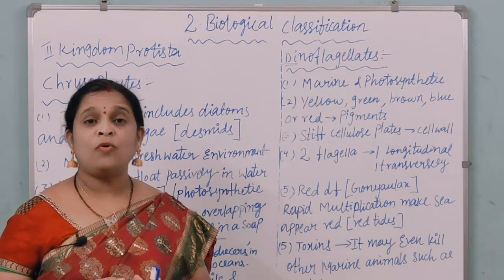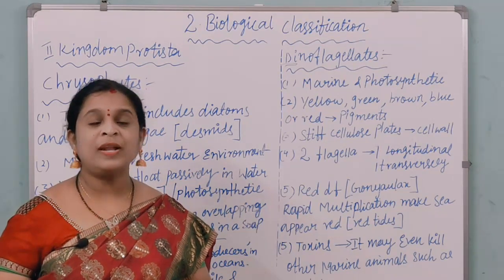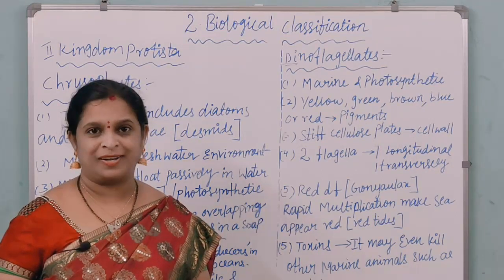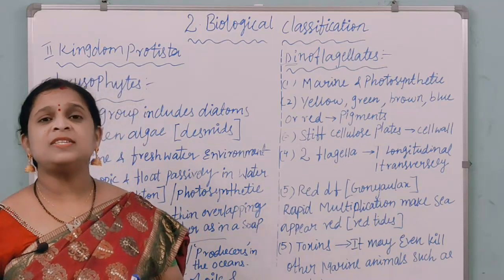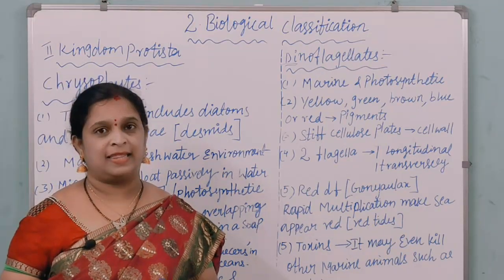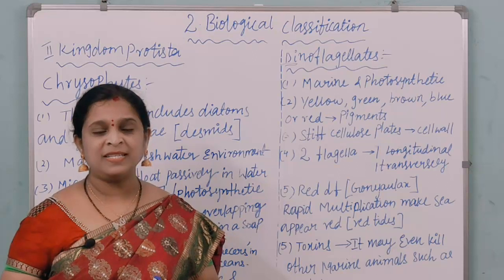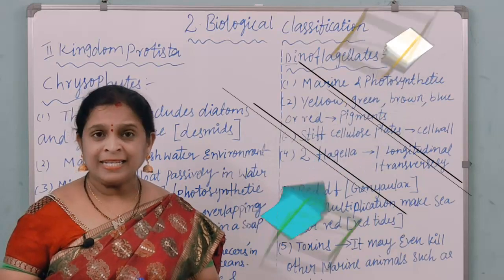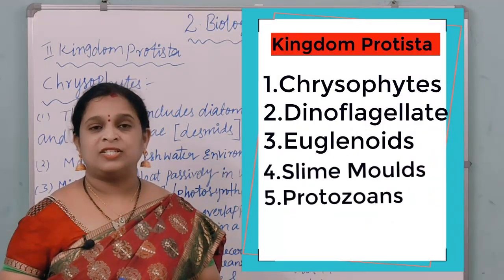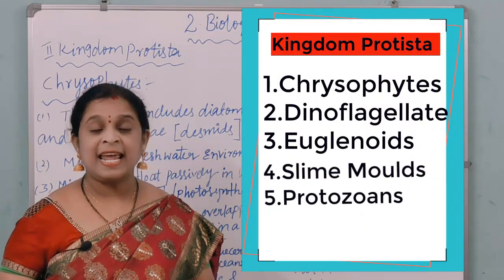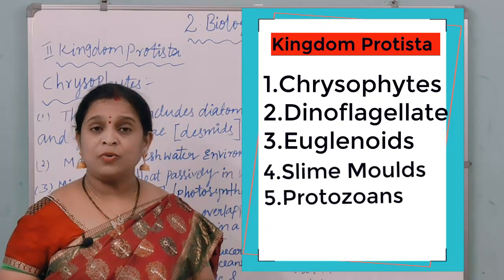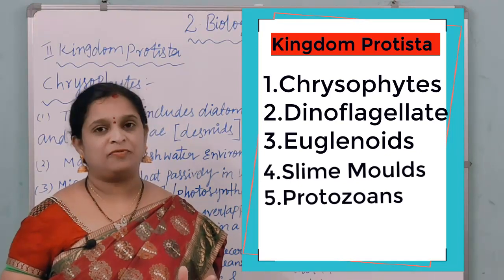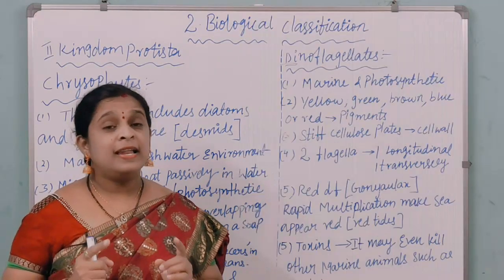They undergo reproduction by asexual and sexual methods by cell fusion or zygote formation. A few members of Protista are photosynthetic, consisting of pigments responsible for the preparation of food material. It is divided into five categories: first is chrysophytes, second is dinoflagellates, third is euglenoids, fourth is slime moulds, and fifth is protozoans.